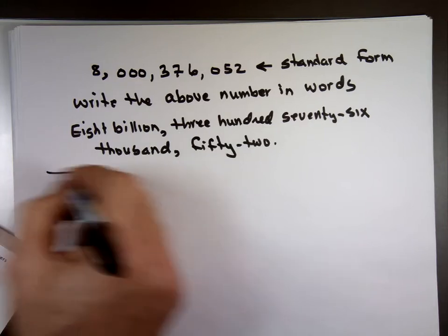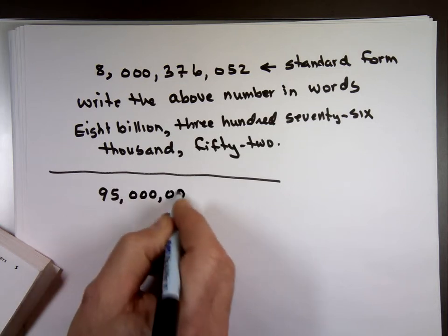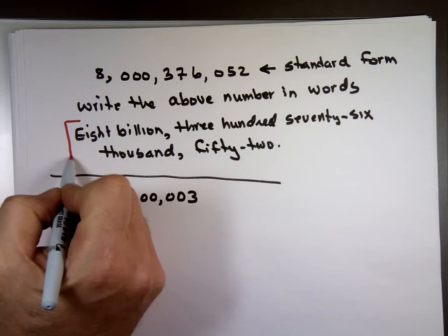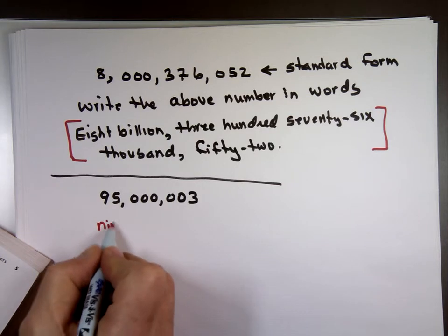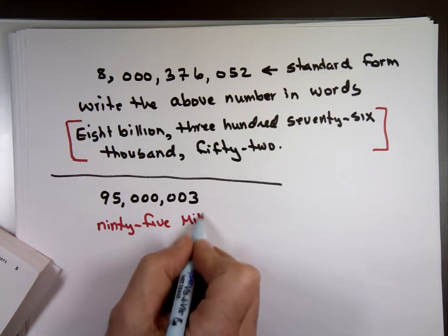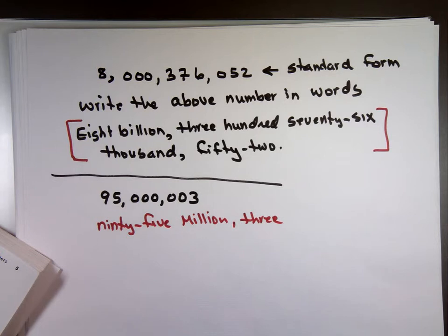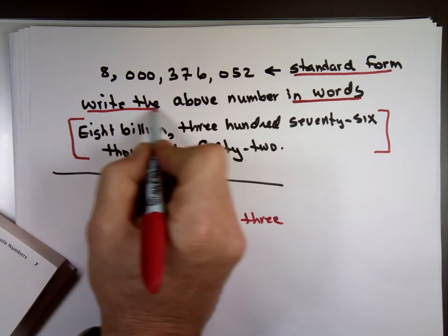Let's try another one. I'll make it easy on me. What do you think? How are we going to write that? Ninety-five millions, you said? Three. There's no thousand. Just three. Again, that's writing using what? In words. This is in standard form. This is write the above number in words.